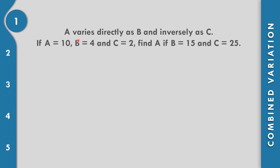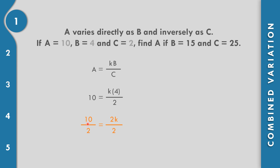Let us solve problem number one. A varies directly as b and inversely as c, so the formula is a equals k times b over c. Given a equals 10, b equals 4, and c equals 2, we substitute: 10 equals k times 4 over 2, giving 10 equals 2k. Dividing both sides by 2, we get k equals 5.